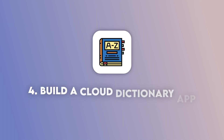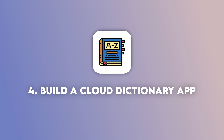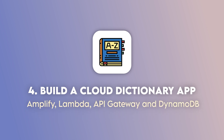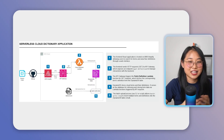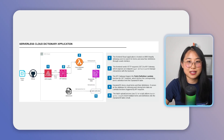Project number four is to build a cloud dictionary application using Amplify, API Gateway, Lambda and DynamoDB. This project is where you'll create an application where users can search for cloud-related terms and get definitions for them — just like what you'd expect from a cloud dictionary. Here's what the architectural diagram looks like and how to build it step-by-step.